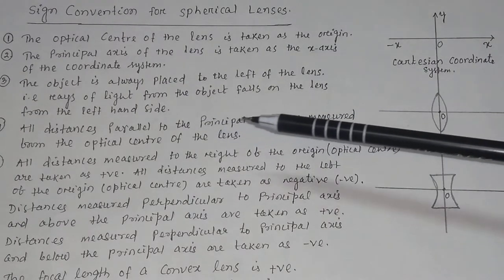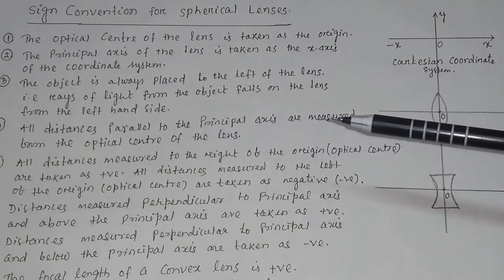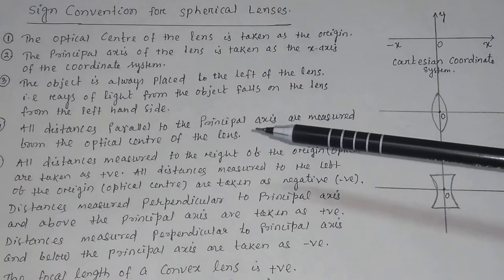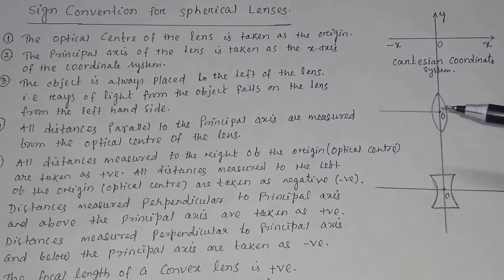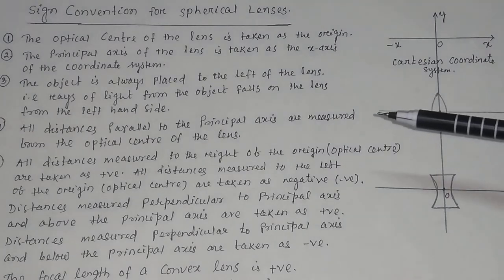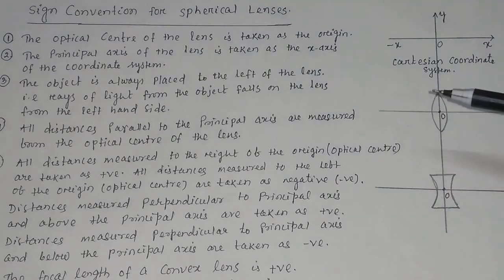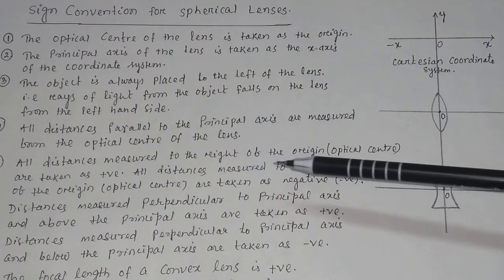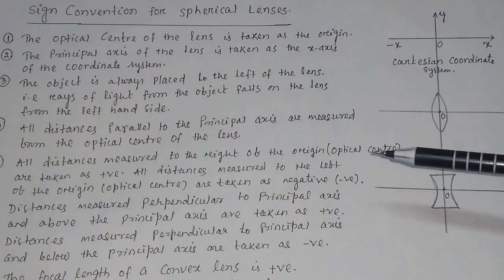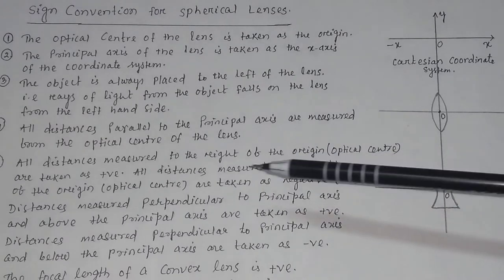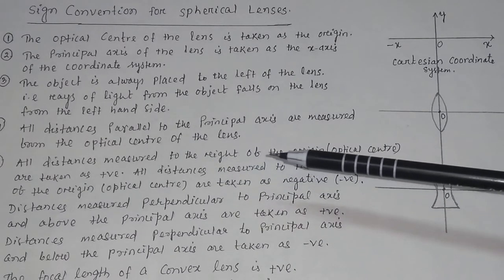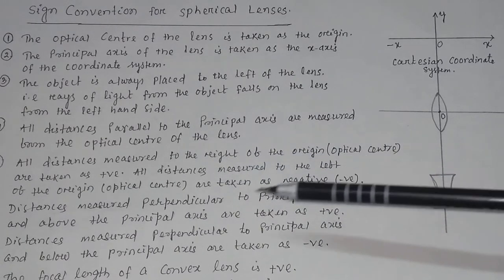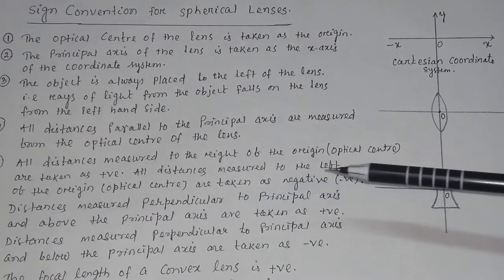All distances parallel to the principal axis are measured from the optical center of the lens. Any distance parallel to your x-axis will be measured from the optical center. All distances measured to the right of the origin or optical center are taken as positive.